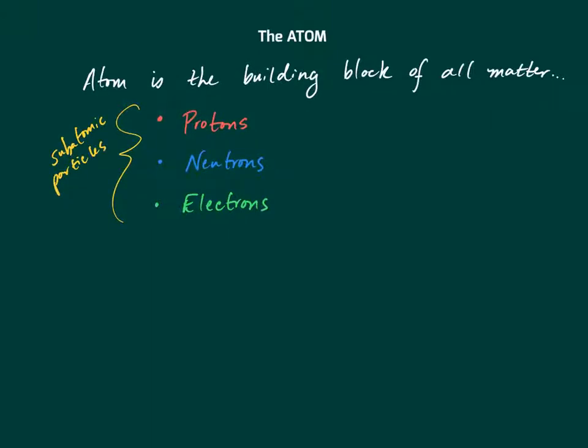And they each have their own unique characteristics. So protons, you should have seen today, they have a positive charge, and they are located in the nucleus. And I'll get deeper into what the nucleus is in a second here. Neutrons, they have no charge. They have no charge whatsoever, and they are also located in the nucleus.